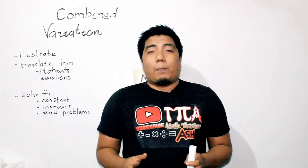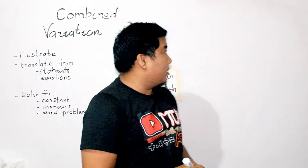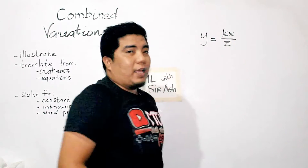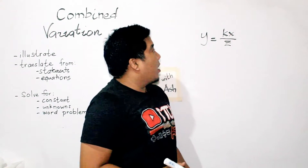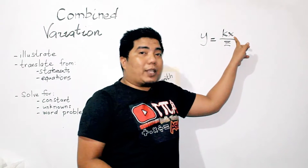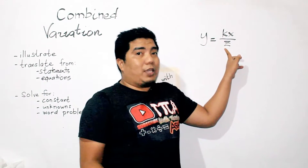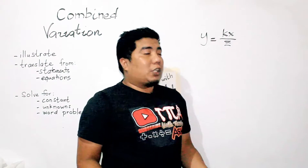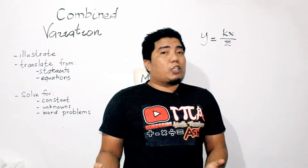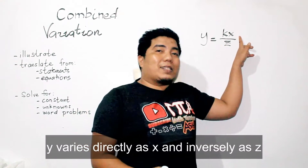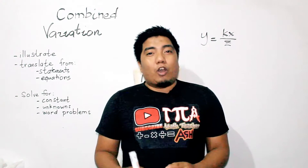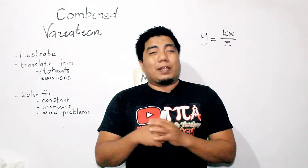How do we illustrate combined variations? Combined variation is denoted as y is equal to kx over z. Here, y is what we call the dependent variable. Y is directly proportional to x, and y is inversely proportional to z. We also need a constant of variation. We read this as: y varies directly as x and inversely as z. Basically, combined variation is a combination of direct variation and inverse variation in one mathematical sentence.